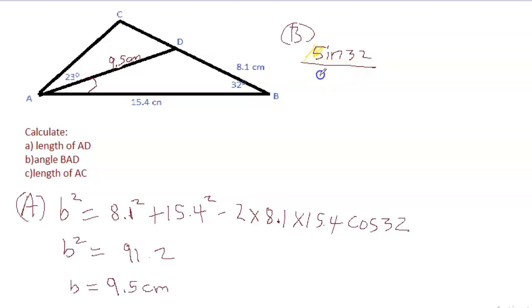So sine of 32 over the opposite side which is 9.5 is equal to sine of A - and we do not know what A is - over the opposite side which is 8.1. Now we can do some transposing here, so we get 9.5 sine A equal to 8.1 sine 32.